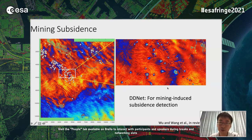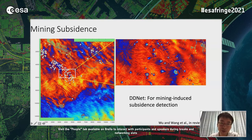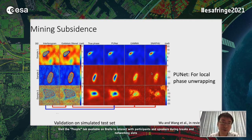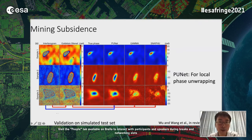This is a detection result from a single interferogram — it successfully detects most subsidence patterns produced by mining activities. If we use this network to detect subsidence centers from a stack of interferograms and stack them together, we get a more reliable detection result. After detection, we unwrap the interferograms with our network. Validated on simulated test sets, when the signal-to-noise level is high, our network predicts the true phase closely — similar to GAMMA and SNAPHU. But when fringes are denser, our network still predicts accurately while traditional methods begin to underestimate.